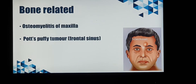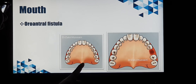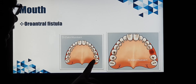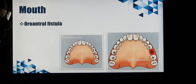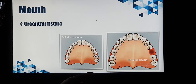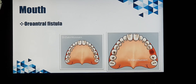Bone-related complications: the infection can involve the bone surrounding the maxilla, which is osteomyelitis of the maxilla, or it can involve the bone near the frontal sinus, termed Pott's puffy tumour. Mouth-related complications: if a patient has maxillary sinus infection and a molar tooth infection and the dentist removes that molar tooth — which is very closely related to the maxillary sinus — the hole resulting from the tooth removal will not close if chronic sinusitis is present. This is called an oroantral fistula, and to heal it, the sinusitis must be treated first.